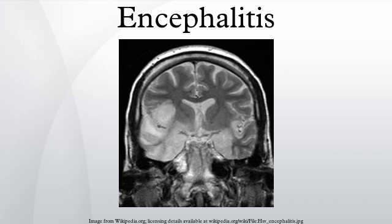The incidence of acute encephalitis in western countries is 7.4 cases per 100,000 population per year. In tropical countries, the incidence is 6.34 per 100,000 per year. During 2010 it caused about 120,000 deaths, down from 144,000 in 1990. Herpes simplex encephalitis has an incidence of 2.4 per million population per year.